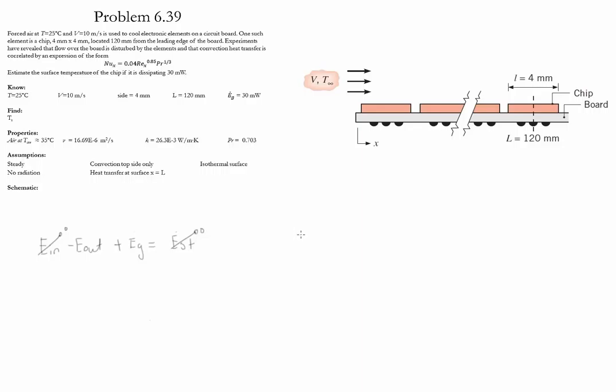The amount of energy out is equal to the convection heat that is being lost, and the energy that is generated equals the power generated by the microchip, which is equal to 30 microwatts.